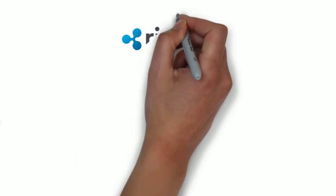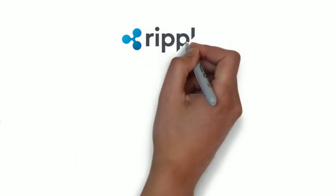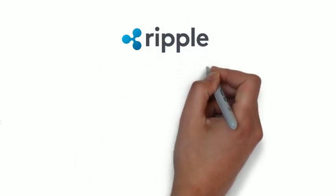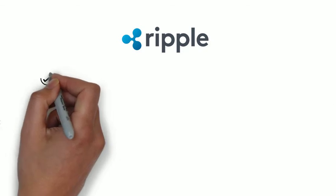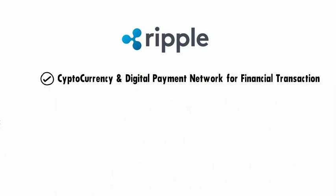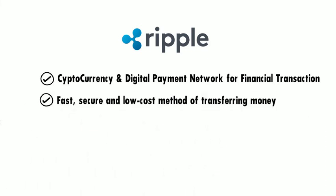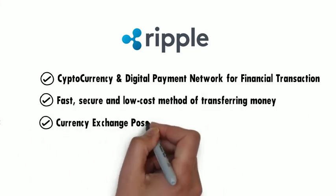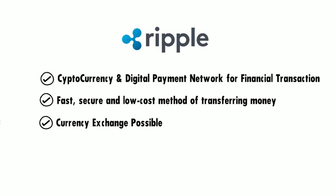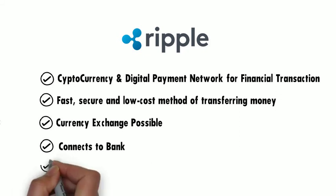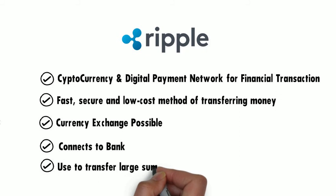4. Ripple. Ripple was released in 2012 and acts as both a cryptocurrency and a digital payment network for financial transactions. It's a global settlement network designed to create a fast, secure, and low-cost method of transferring money. Ripple allows for any type of currency to be exchanged, from US dollars and Bitcoin to gold and Euro. It connects to banks, unlike other currencies. Ripple also differs from other digital currencies because its primary focus is not person-to-person transactions, but rather moving sums of money on a larger scale.